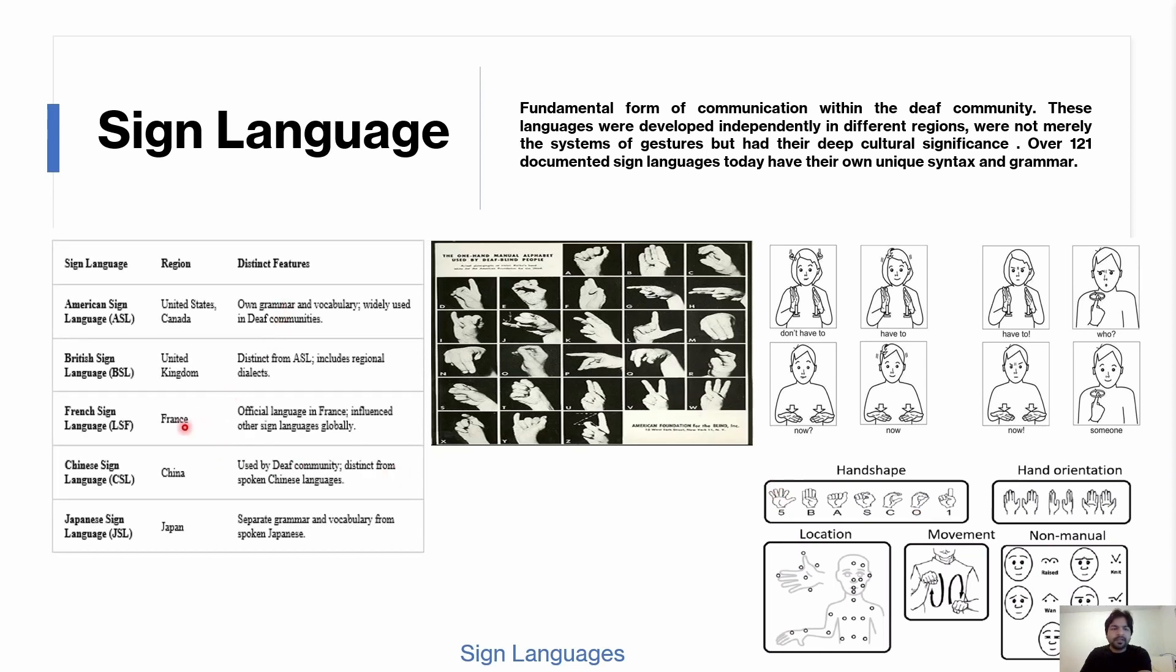Here are some famous sign languages which exist in the world: American Sign Language, British, French, Chinese, and Japanese. All in all, there are over 121 documented sign languages because sign languages are not just American Sign Language, they also have dialects.